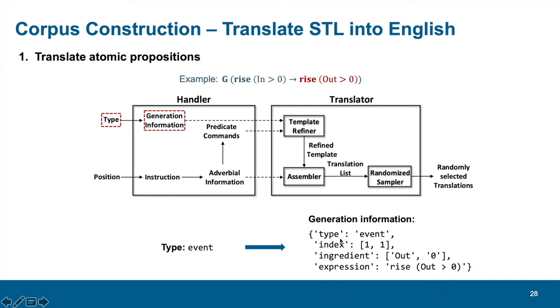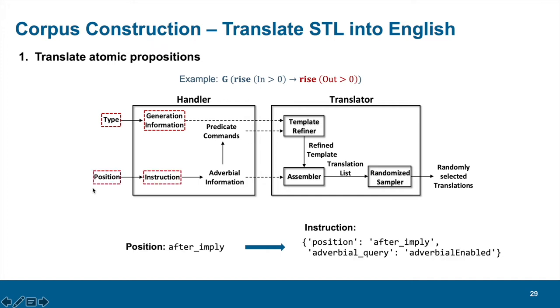The second pipeline, shown in the lower part, will generate adverbial information and commands specially used to operate predicates. They receive the positional information of the STL fragment as input. Since the postcondition is after the implication symbol, the position is a string denoted as after implied. The positional information will trigger corresponding translation instruction, which will decide whether to add adverbial modifiers in the translation. In our example, obviously we need them.